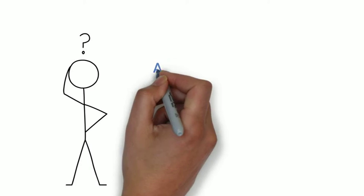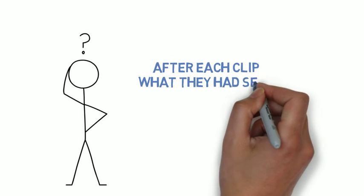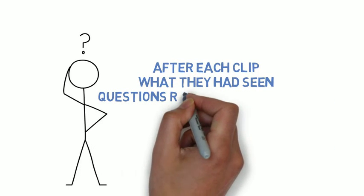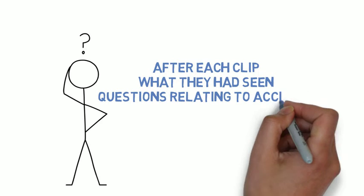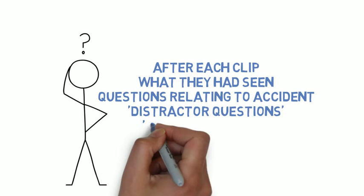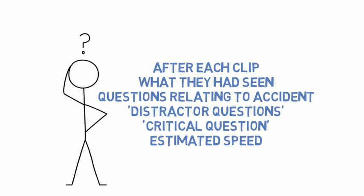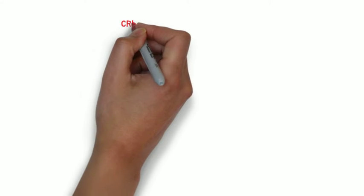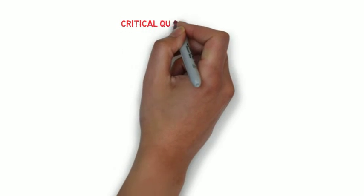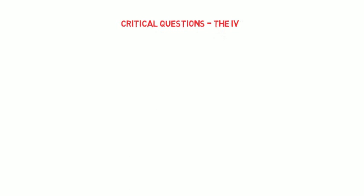After the videos, after each video, they were asked some questions about what they'd seen. So kind of general questions about the accident itself, and then some more specific questions about the accident they'd seen. These were called distractor questions. They were also asked a critical question about the estimate of the speed the cars were going at. Now, these critical questions are crucial for experiment one, because these critical questions are the independent variable.